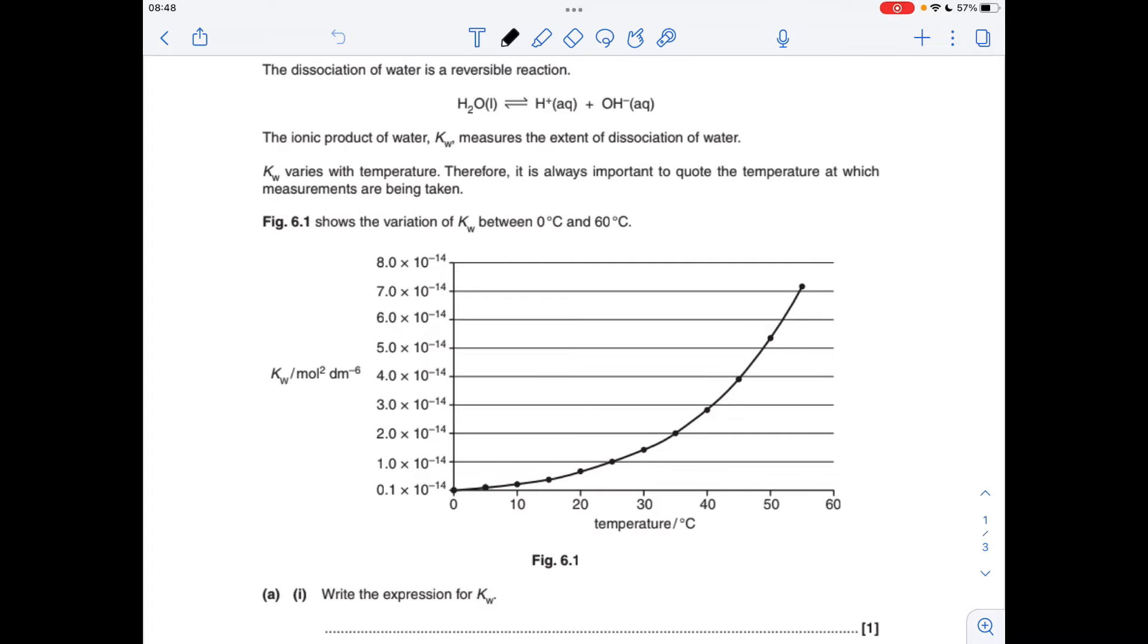So the first thing we've got to do is write the expression for Kw. Remember Kw stands for the ionic product of water. So Kw equals the H plus concentration multiplied by the OH minus concentration.